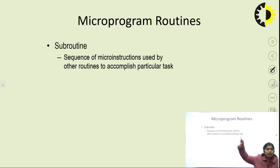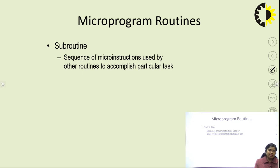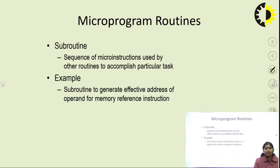A subroutine is also a group of micro instructions, but it performs some specific task. Subroutines are stored in the SBR (subroutine register), just as the control word is stored in the CDR and the next address instructions are stored in the CAR. The subroutine generates the effective address of the operand for memory reference instructions.